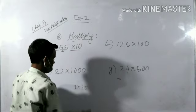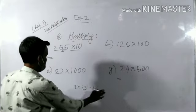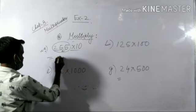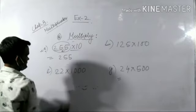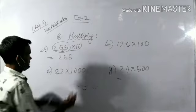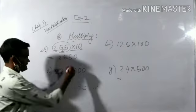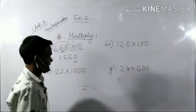Suppose 255 multiplied by 10. So 255 multiplied by 1 is 255. And if 10 has one zero, you simply add that zero at the end. So this is your answer: 2550.